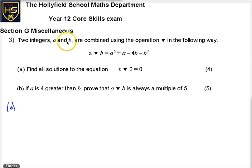So let's read it through. Two integers, A and B, are combined using the operation triangle, or however you want to call it, I think you can call it delta as well, capital delta, in the following way. A triangle B means that you do A squared plus A minus 4B minus B squared, so it's just sum, it's not multiply, it's not divide, it's sum operation which makes it do this.